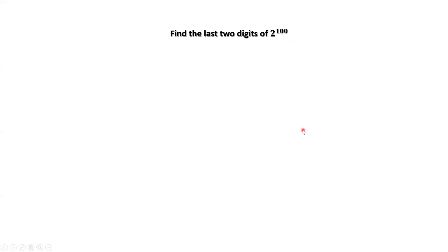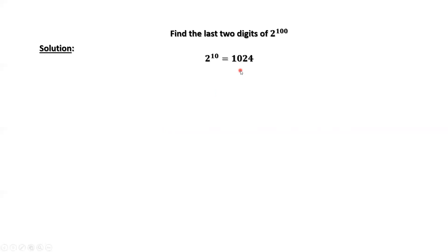The question here is to find the last two digits, not one digit. How to solve this question? Here is a simple result: 2 to the power of 10 equals 1024. You can easily check this result.